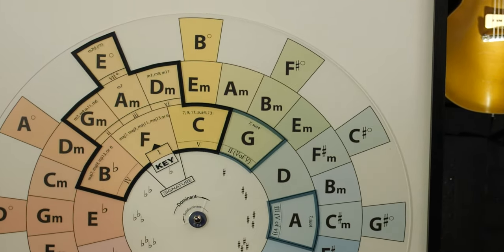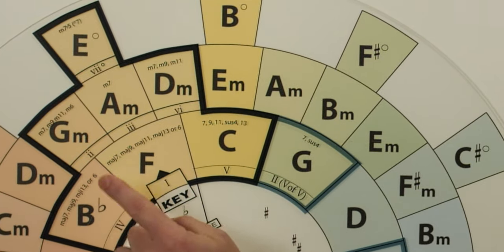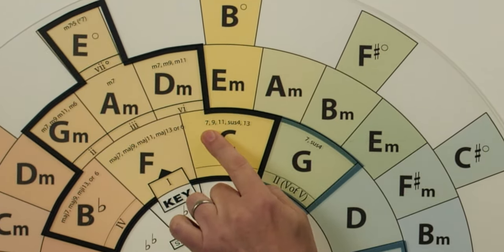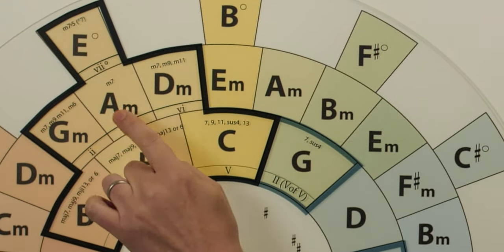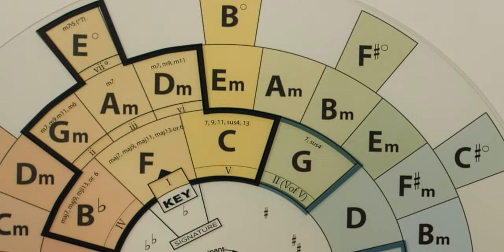Here's the key of F. The primary chords, F major seventh, B flat or B flat major seven, C seven, D minor, D minor, D minor seventh, A minor or a minor seventh, G minor minor seventh, E diminished, minor seventh flat five.